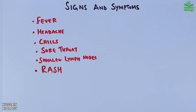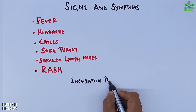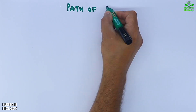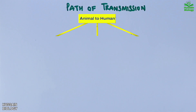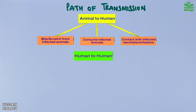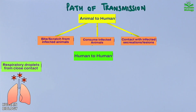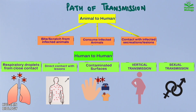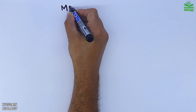The incubation period of this virus ranges between 5 to 21 days. The transmission paths are as follows: animal-to-human transmission involves bites or scratches from infected animals, consuming infected animals, or contact with infected secretions or lesions. Human-to-human transmission occurs via respiratory droplets from close contact, direct contact with lesions, contaminated surfaces, vertical transmission, or sexual transmission. Finally, let's look at the mpox disease phases and its progression.